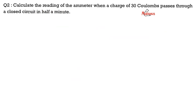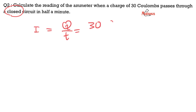Question number two: calculate the reading of the ammeter when a charge of 30 coulombs passes through a closed circuit in half a minute. Now the circuit is closed, so I can use I equals Q over T: 30 coulombs divided by 30 seconds equals 1 ampere. Brilliant.